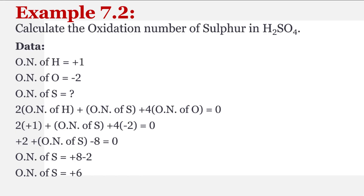Now example 7.2: the question is calculate the oxidation number of sulfur in sulfuric acid H2SO4. Is mein humne sulfur ka oxidation number find out karna hai. Oxidation number of hydrogen is equal to plus one, oxidation number of oxygen is equal to minus two — yeh hum mein pehle hi pata hai — and oxidation number of sulfur humne find out karna hai.